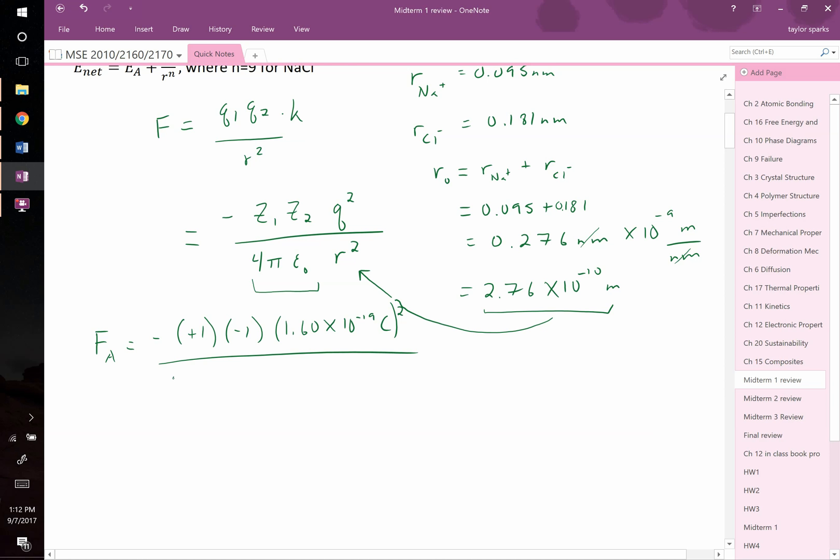Divide this by 4 times pi times epsilon naught. Epsilon naught is the permittivity of free space, which is going to be 8.85 times 10 to the negative 12. That's units of coulombs per newton meter squared. We multiply this finally by 2.76 times 10 to the negative 10 meters, and we're going to be squaring that.